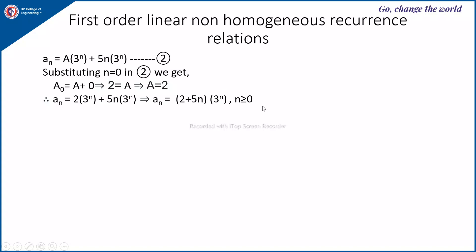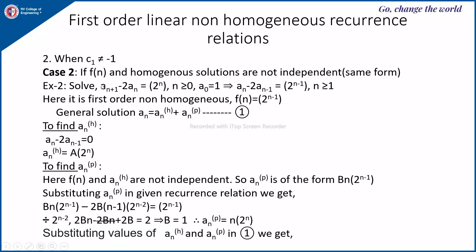Let us take one more example. Solve aₙ₊₁ - 2aₙ = 2ⁿ, where f(n) = 2ⁿ. Whenever the relation is given in aₙ₊₁ form, you must first convert it to the standard form aₙ - 2aₙ₋₁, which becomes 2ⁿ⁻¹ for n ≥ 1. So now f(n) = 2ⁿ⁻¹.